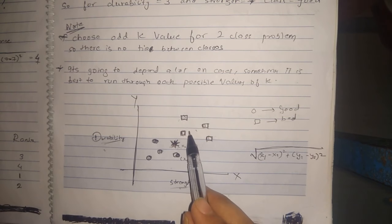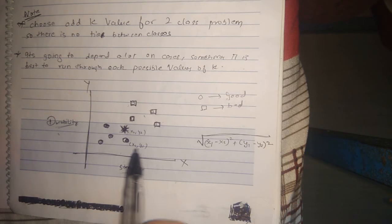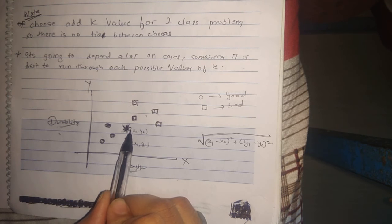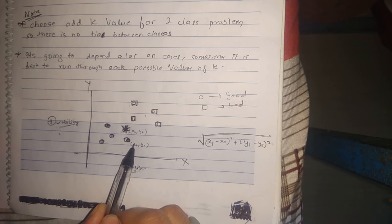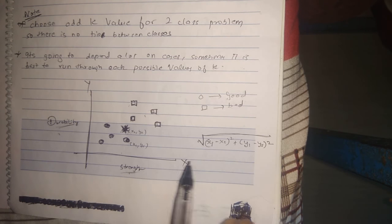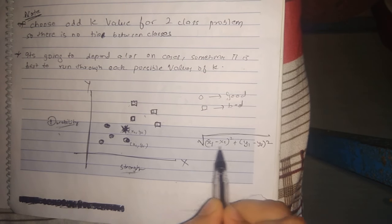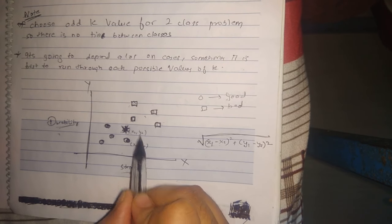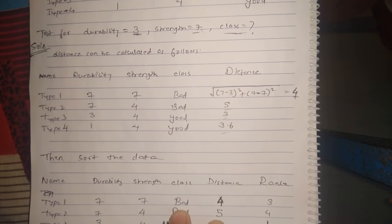To find the distance between two points we will use the Euclidean formula. Suppose one point has coordinates (x2, y2) and another has coordinates (x1, y1). The distance between the two points is: square root of (x1 − x2)² + (y1 − y2)².